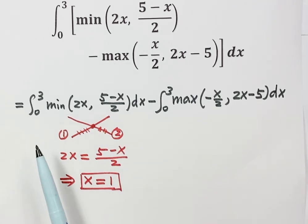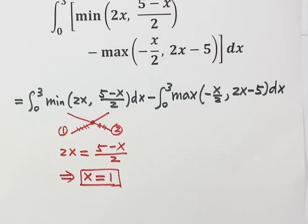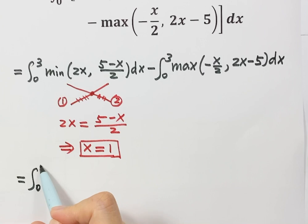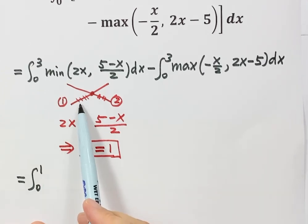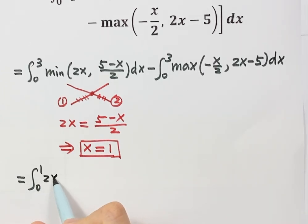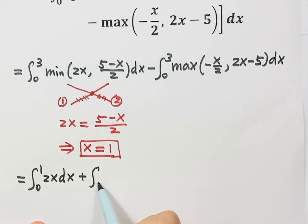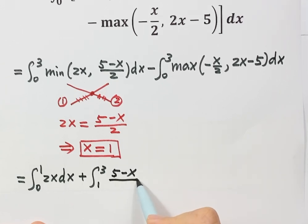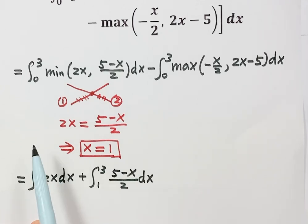So for this first integral we split into two parts: from 0 to 1, line 1 is smaller, so that's 2x; then from 1 to 3, line 2 is below, so that's 5 minus x over 2.